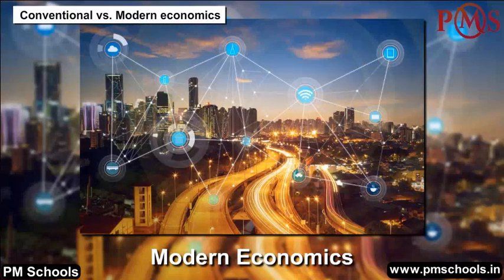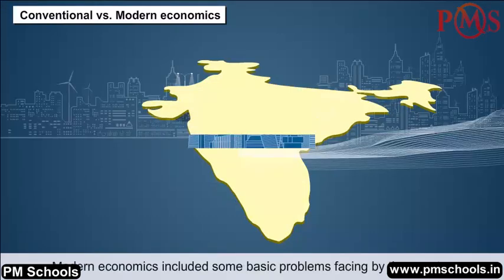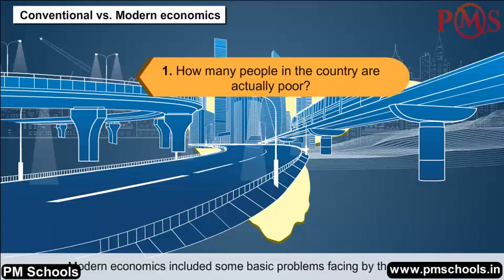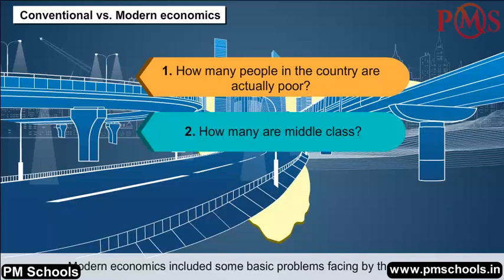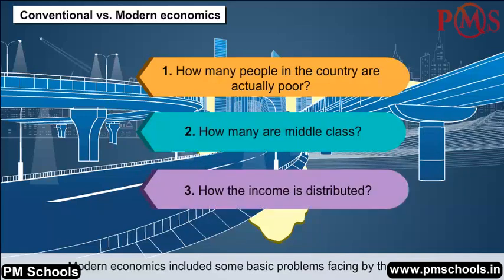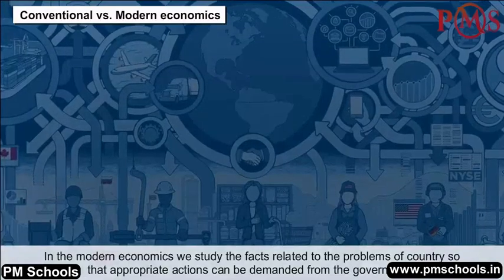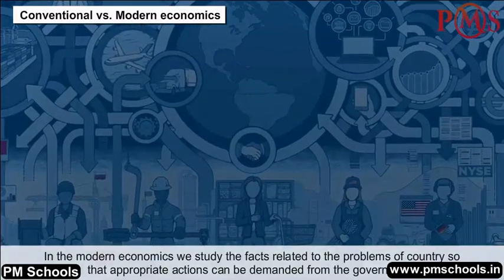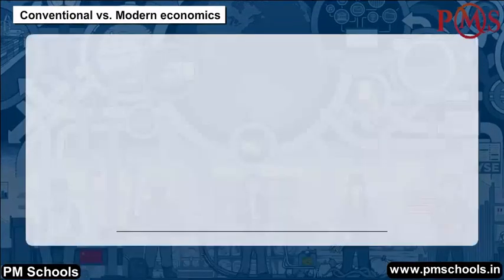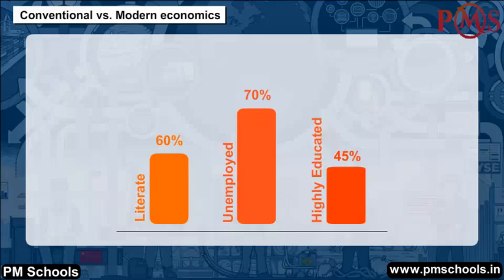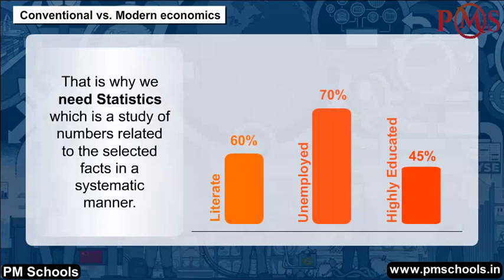Modern economics includes some basic problems facing a country — like how many people are actually poor, how many are middle class, and how income is distributed. In modern economics, we study facts related to the problems of the country so that appropriate actions can be demanded from the government — such as how many people are literate, how many are unemployed, and how many are highly educated.